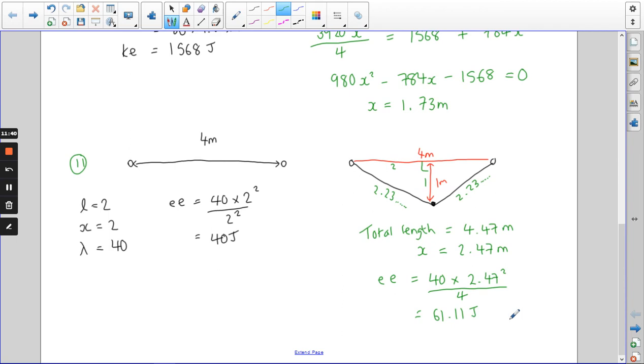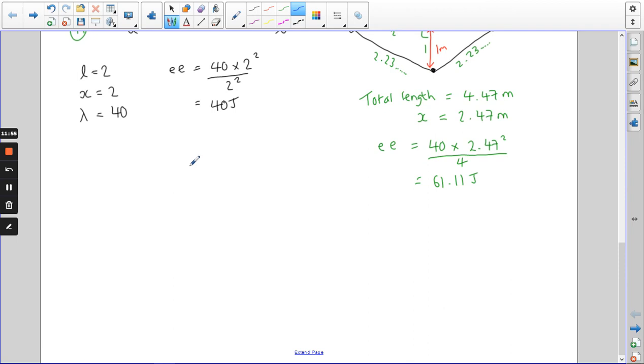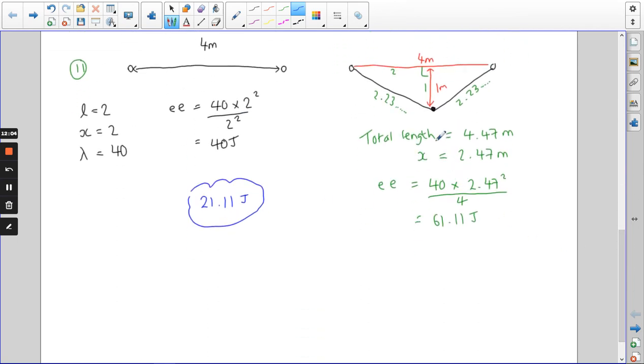So we've increased the amount of energy being stored by 21.11 joules. And that number's really important because what happens then in this question is that we release the string, this ball fires that way, and the string comes back to this state. Back to how it started. But when it comes back to where it started, remember, it's still got 40 joules of elastic energy in this original state. So it's only the extra 21.11 joules that gets converted into kinetic energy. I think a common fault in this question is people assume that all 61.1 joules are going to become kinetic, but they don't, because there needs to be 40 joules still in the string when it goes back to being sort of just a horizontal string of my diagram.